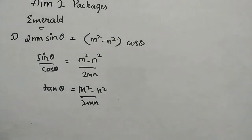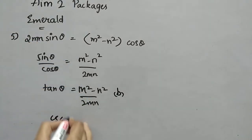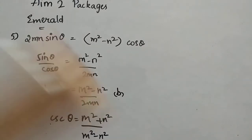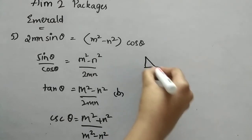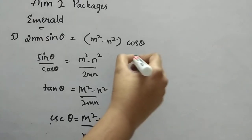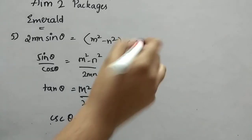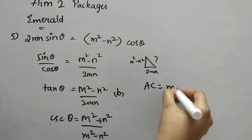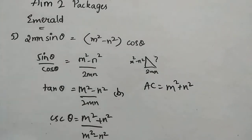Using the triangle with opposite = (m² − n²), adjacent = 2mn, and applying the Pythagorean theorem, the hypotenuse AC = m² + n². From this, cosec θ = (m² + n²) / (m² − n²). So options B and C are both correct, making the other options the incorrect statements.